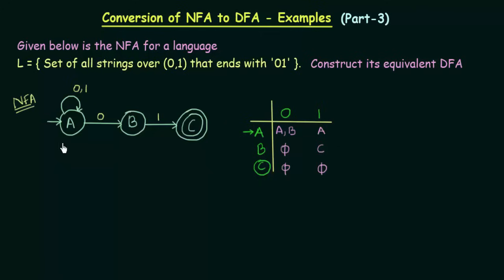Here we see the transition diagram for this NFA and here we have the transition table. We see that we have three states A, B and C. A on getting input 0 stays in A and also goes to B, and on getting input 1 it stays in A itself. B on getting input 1 goes to C. This is the equivalent transition table for that.